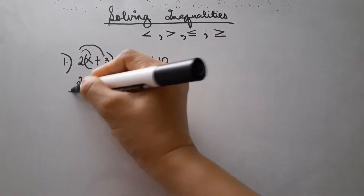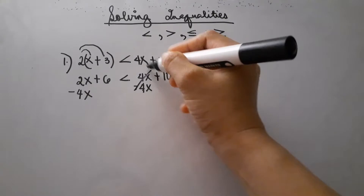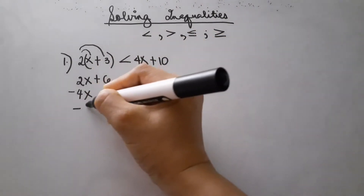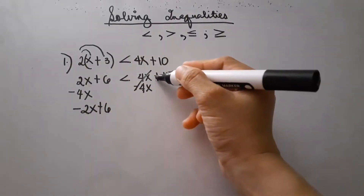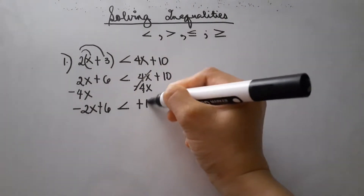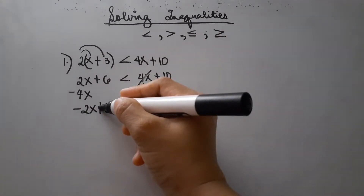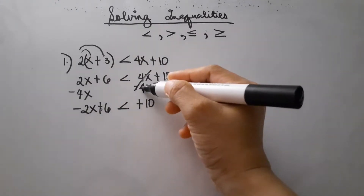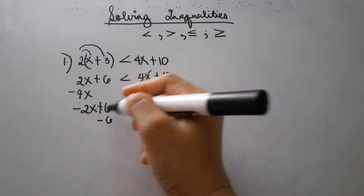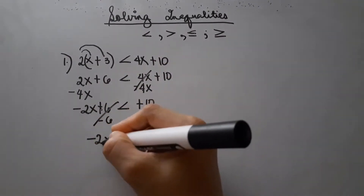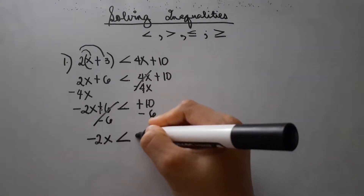When we add both sides to isolate the value of x, we subtract negative 4x from both sides. So the negative 4x cancels out and the remaining becomes negative 2x. Then we isolate the constant term — positive 6 — by subtracting 6 from each side, giving us negative 2x less than positive 4.